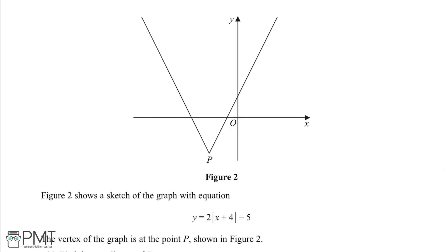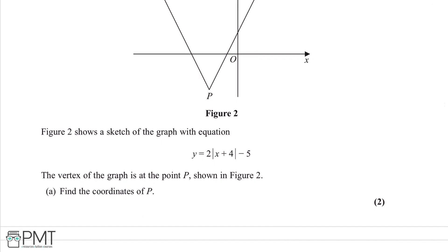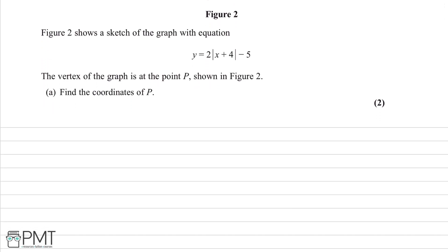In this question we're shown figure 2, which is a sketch of the graph with the equation y = 2|x+4| - 5, and we're asked to find the coordinates of P. We can see P here, which almost looks like our turning point, and it's safe to say it is our turning point.